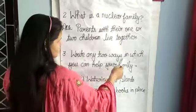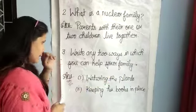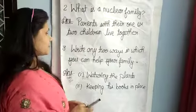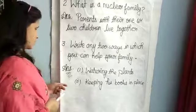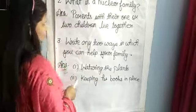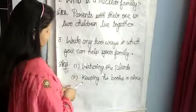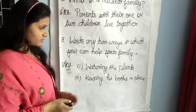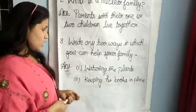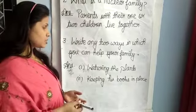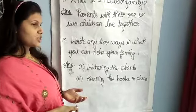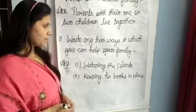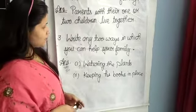Next question: Write any two ways in which you can help your family. First is watering the plants — you can give them water. Second is keeping your books in place. You can also help your family by cleaning and decorating.